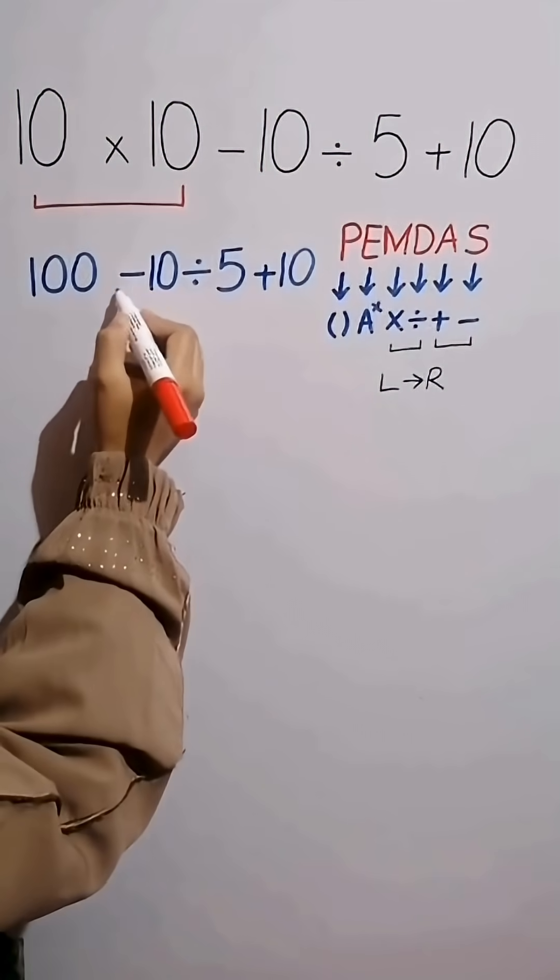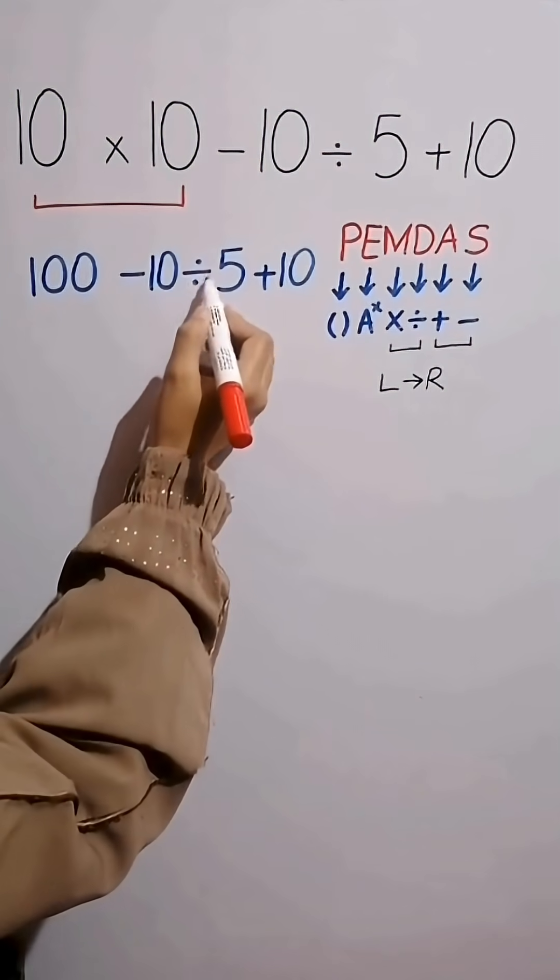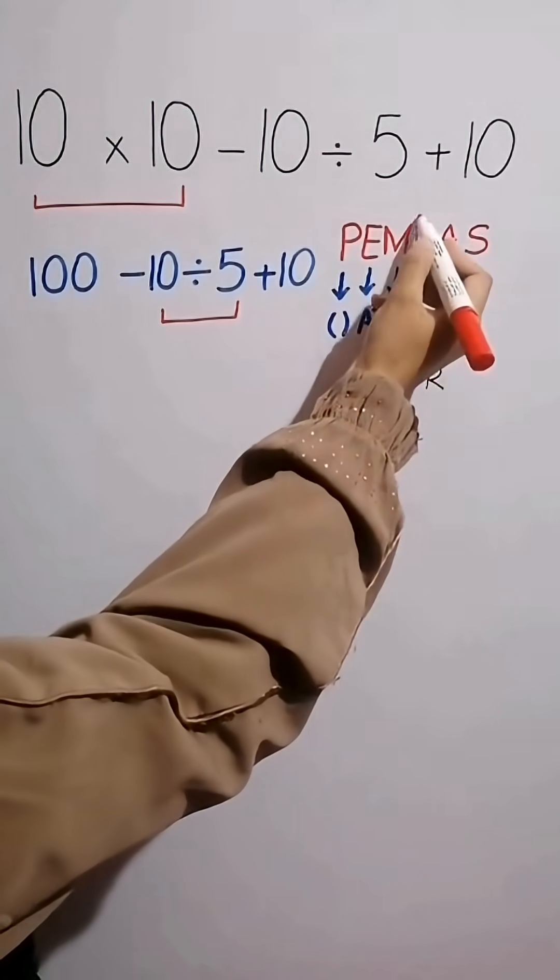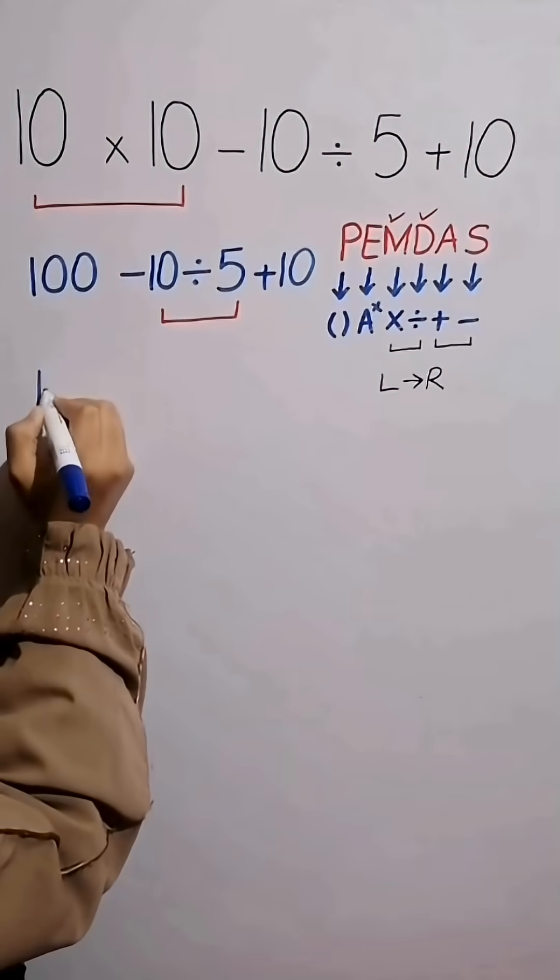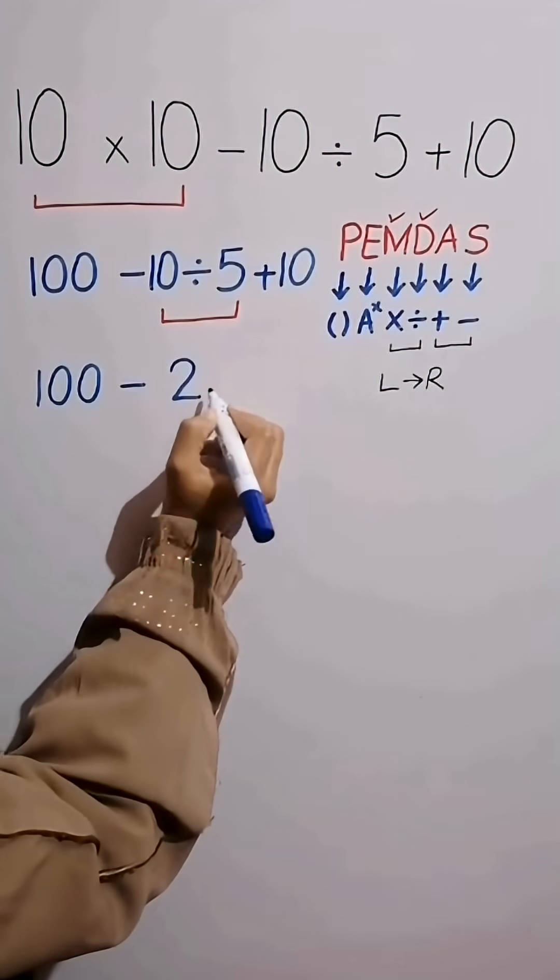Now, we have subtraction followed by division and finally addition. First we do division between 10 and 5 because according to PEMDAS, division comes before addition and subtraction. This simplifies the expression to 100 minus 10 divided by 5 equals 2, and then plus 10.